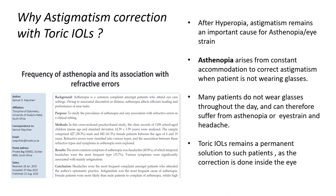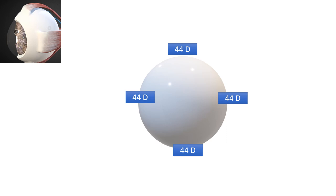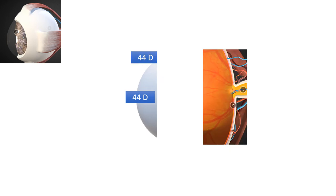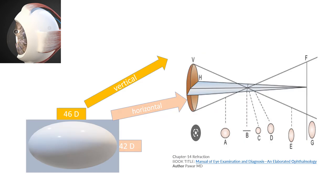The Gullstrand eye model tells us that the total refractive power of the eye is around 58 diopters. Setting aside the crystalline lens, two-thirds of this power comes from the cornea. In a normal cornea there is no defocus, no myopia, no hyperopia, and no astigmatism — the cornea is quite spherical, so any ray of light passing through it reaches the retina normally.